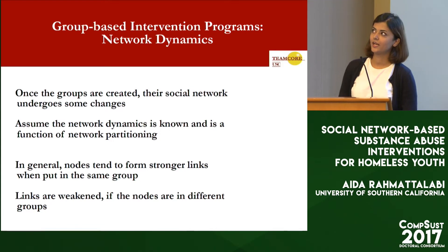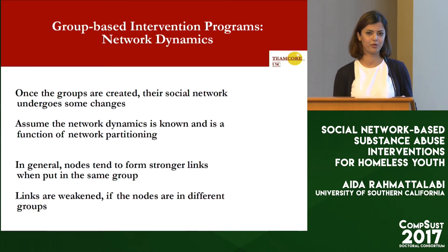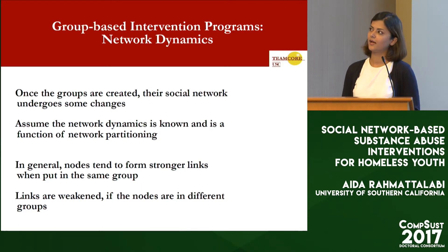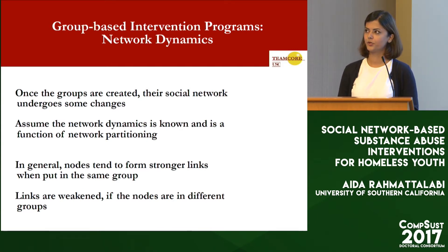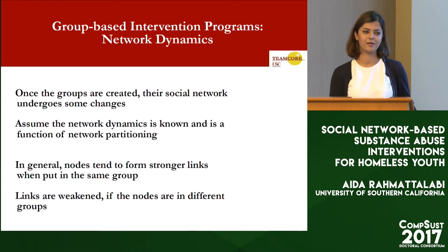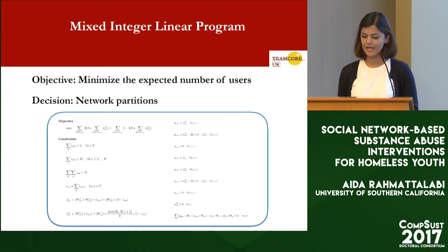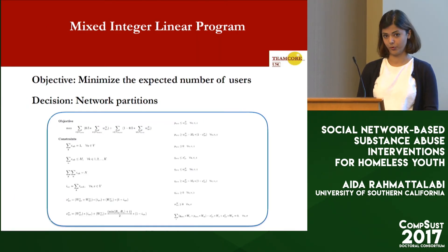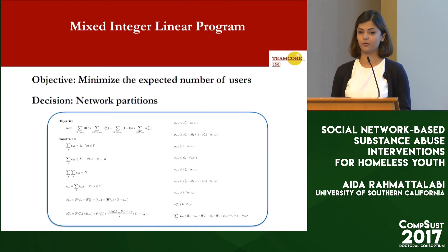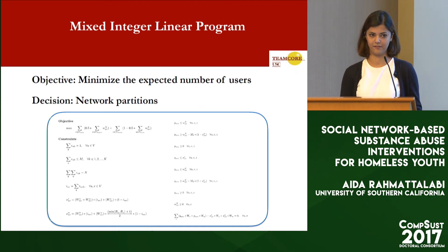The second piece is the network dynamics — how different assignments of nodes result in different connections being made and cut. We assume the network dynamics are a function known to us, purely a function of node assignments. The overall idea is that if two nodes are put in the same group, their connection becomes stronger; if in different groups, their friendship weakens. We modeled this with a mixed integer linear program with the objective of minimizing the expected number of users at the end of the intervention, with the actions being the different network partitions.